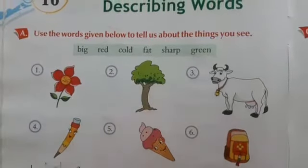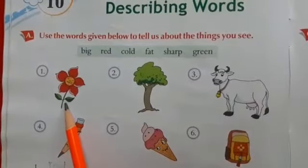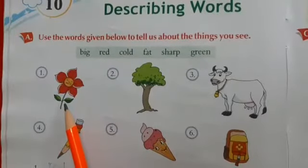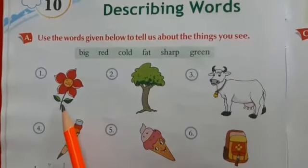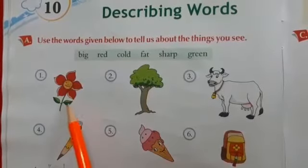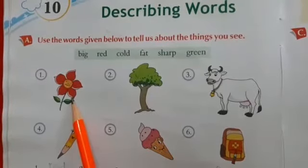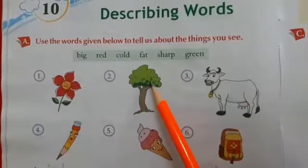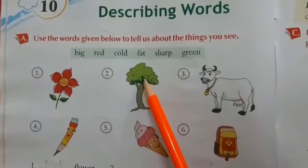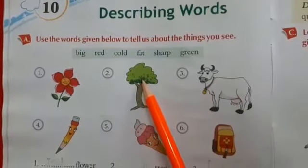Now look at the pictures here. Look at the flower — what is the color of the flower? Red. So 'red flower' — flower is a noun, it is the name of a thing, but it has a red color. So we can describe the flower with 'red,' and that is a describing word. Now look at the tree — what is the color of a tree? Green. So we can say it is a green tree, and 'green' is a describing word.